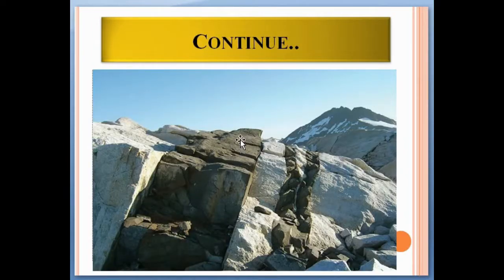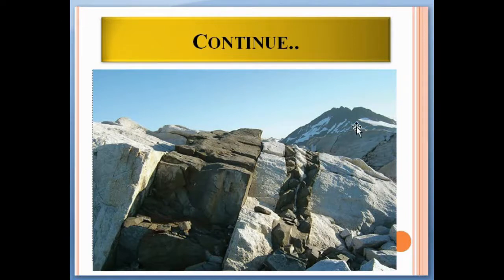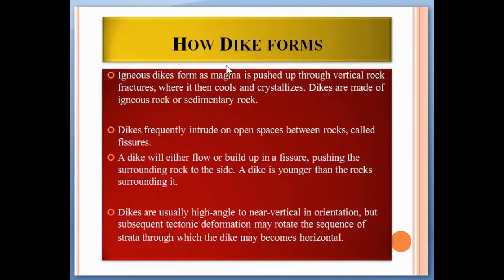Here you can see an example of a dike. As mentioned, a dike is different from the surrounding rock. The white color represents the pre-existent rock, while the darker material is the younger rock — the dike that has intruded into the pre-existent rock. This dike has a different color and texture from the host rock.